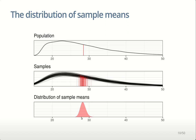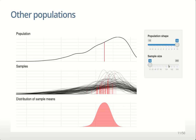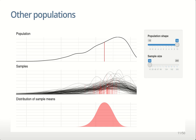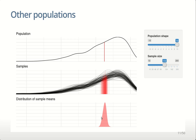This applies no matter what the shape of the population is. Here's one skewed to the left — big tail off to the left — and when we take lots of samples, those samples vary because the sample size is quite small. The shape of the distribution of sample means is roughly a normal distribution. With samples of size 10, there's a little bit of skew, but if I increase the sample size, I get that nice symmetric shape. It doesn't matter whether the population is skewed right, skewed left, or symmetric — the same thing happens.